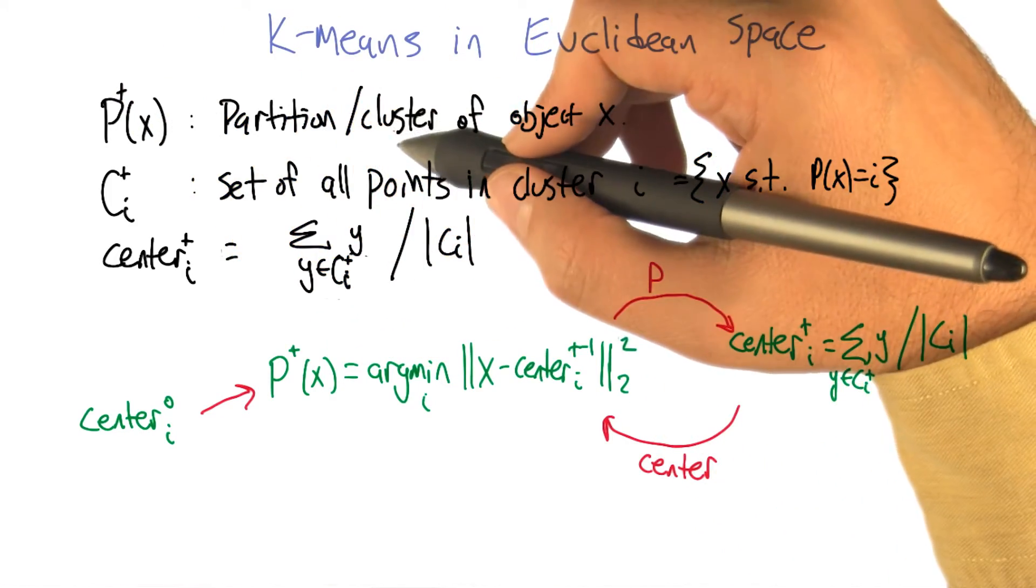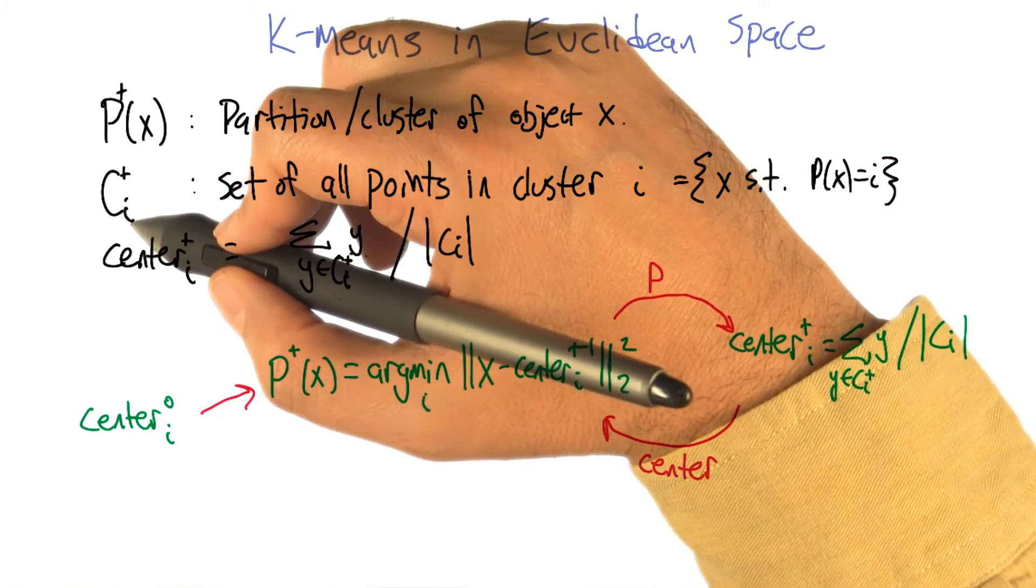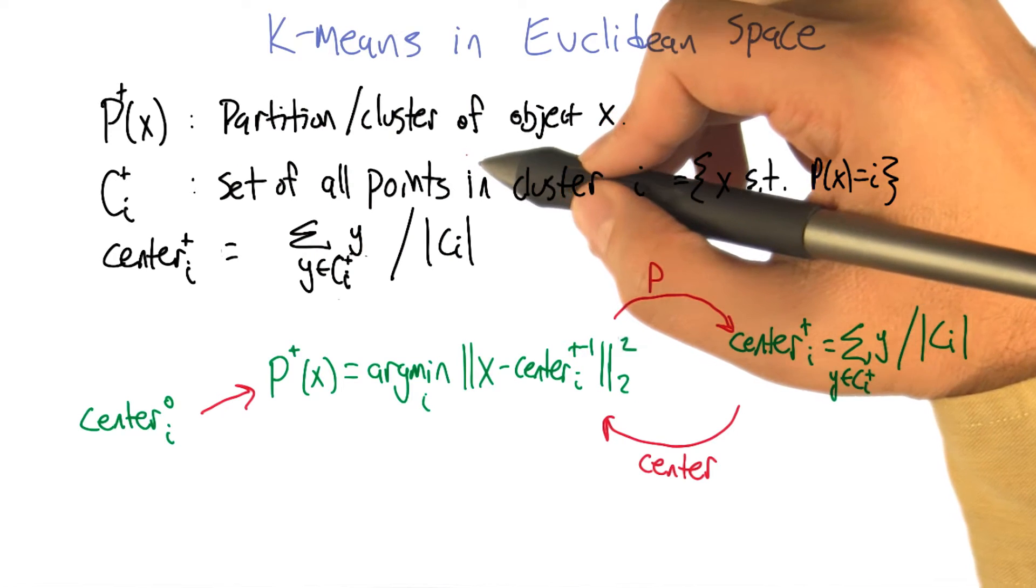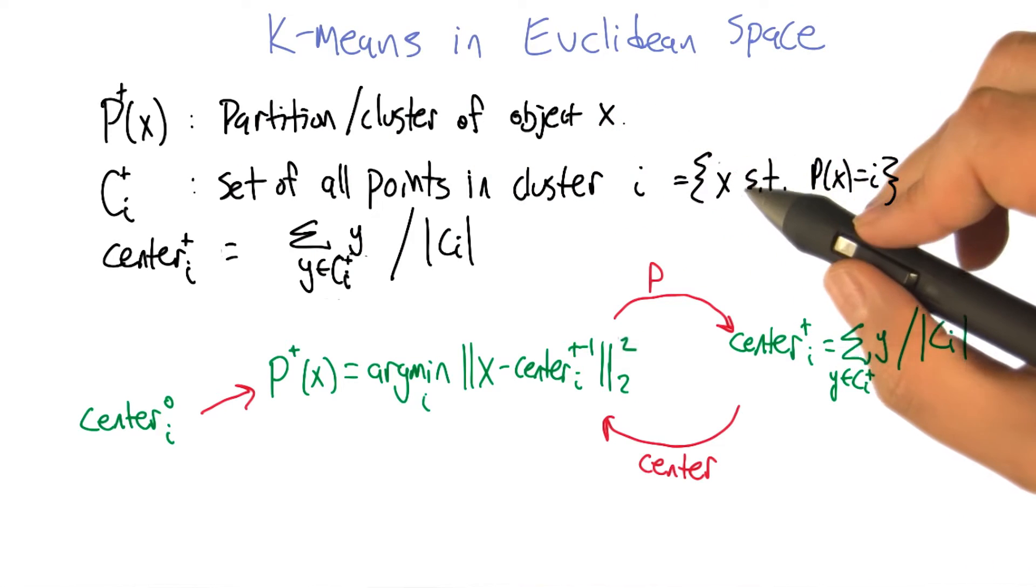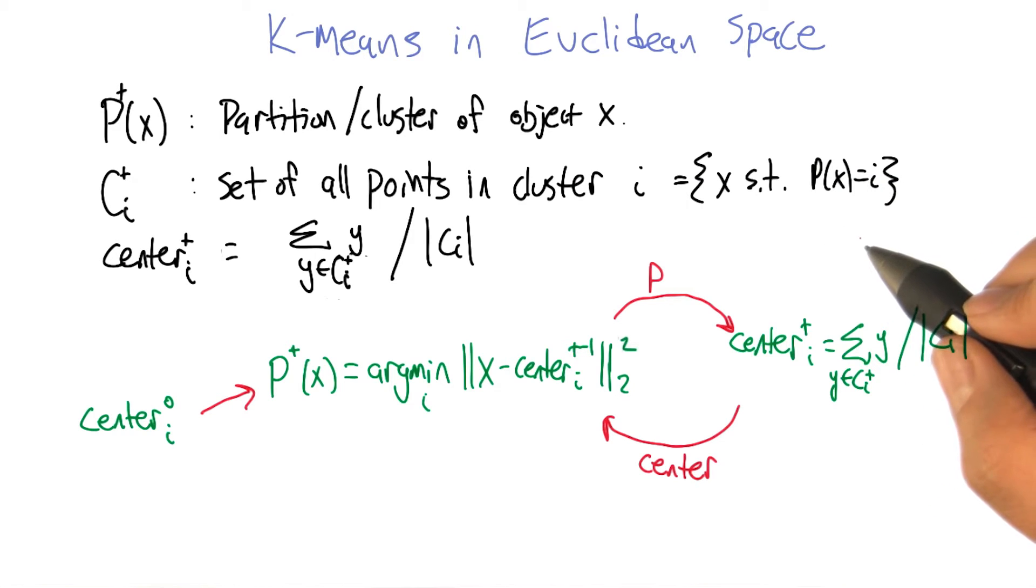We also have another more convenient way of writing that, which is C sub i of t, the set of all points in cluster i. It's just the set of all x such that P(x) equals i. You've got some partition, and everything in the same partition belongs together in what you're calling C for cluster.